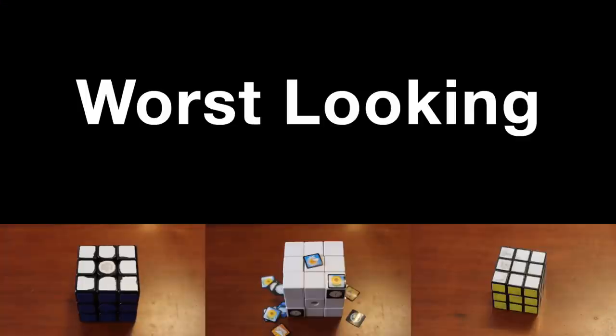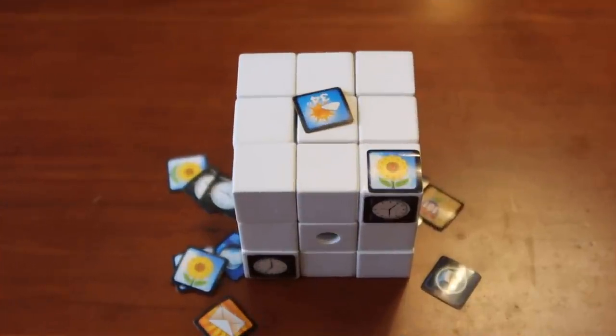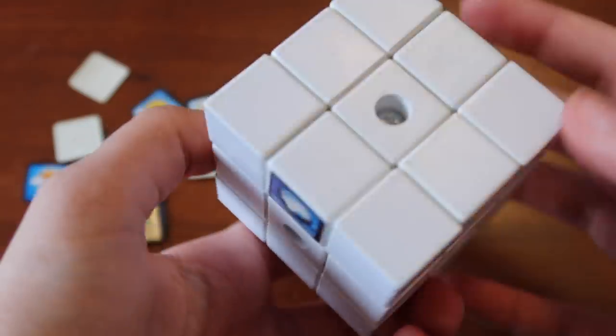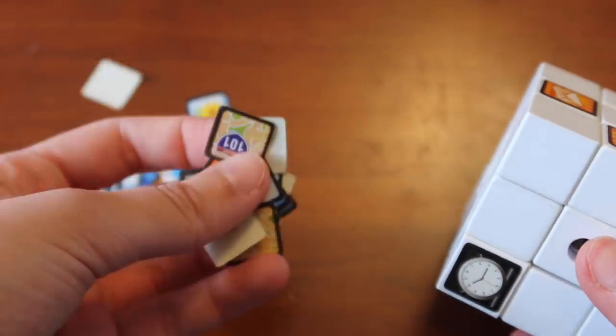Next up we have the iCube, an iconic picture cube. It has under 10 stickers at this point because they've pretty much all fallen off. So yeah, it's pretty much just a plain white cube at this point, not looking too good.